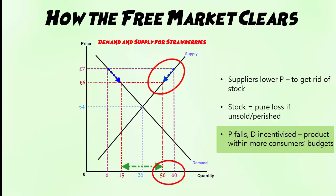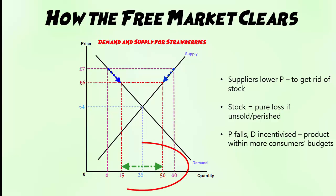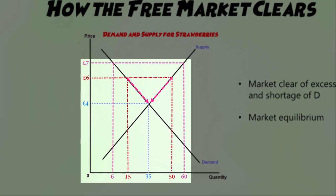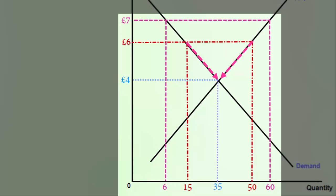This will also disincentivise some suppliers from entering the market, causing some to possibly leave, because they know they can't charge £7 and get the level of profit they were expecting. So the excess supply reduces from 54 — originally 60 minus 6 — to 35, which is now 50 minus 15. There's 50 supplied and 15 purchased at the price of £6. We're still moving closer to free market equilibrium. This process continues until the equilibrium price of £4 is reached, where demand and supply are equal.